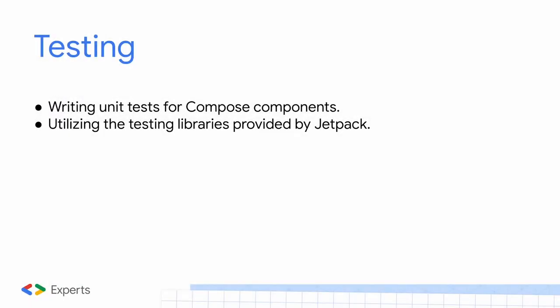Testing is very important because you can't build high quality Android applications without them being well tested. This includes unit tests and UI tests. A UI test verifies if a button is available and shown, and what happens when it's clicked. A unit test tests bits of code that need verification in isolation — for instance, your ViewModels or other logic you want to test in units.